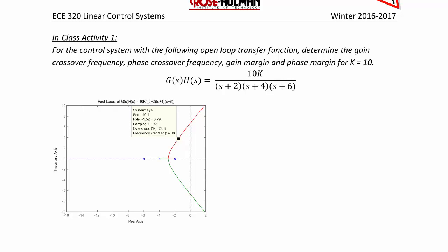Let's try an example. In Class Activity 1, for the control system with the given open-loop transfer function, determine the gain crossover frequency, the phase crossover frequency, the gain margin, and the phase margin for k equals 10. We see here the root locus for k equals 10, and at this point all of our closed-loop poles are in the left half plane, so we do have a stable system. There will be a certain gain by which the poles will be on the imaginary axis, giving a marginally stable system. Now we need to look at the Bode diagram to define these values.